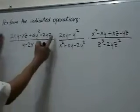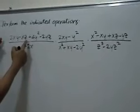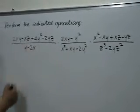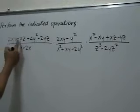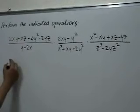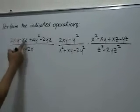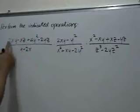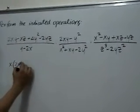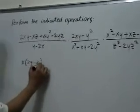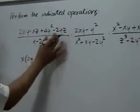So for this numerator, we can group these two terms: 2xy minus xz, a common factor of which is x. So if you factor x from these two terms, you will be left with 2y in the first term and negative z in the second.